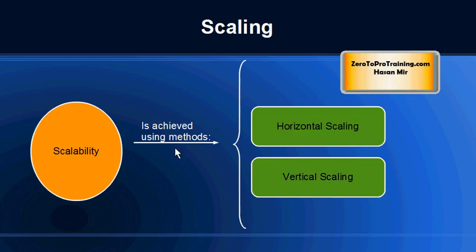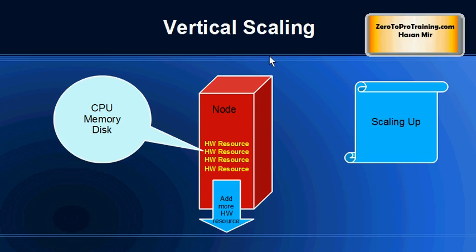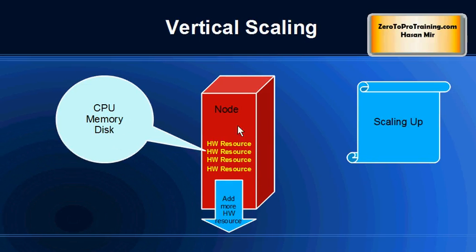Scalability could be achieved using one of two methods: horizontal scaling and vertical scaling. Vertical scaling, or scaling up, means you add more resources to the existing computer — or let's call it a node. For example, you might want to increase the size of the CPU, add more CPUs, add more memory, or add more disk space.